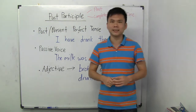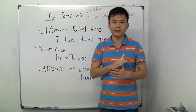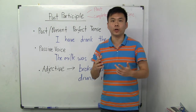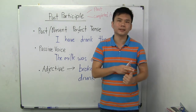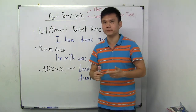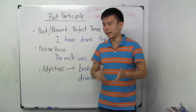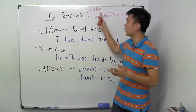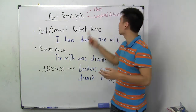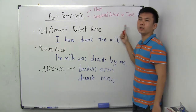So what exactly is the past participle? Everybody keeps thinking there are only two forms — present tense and past tense — but actually there's also the past participle. The past participle indicates things that happened in the past; it also indicates completed action or time.